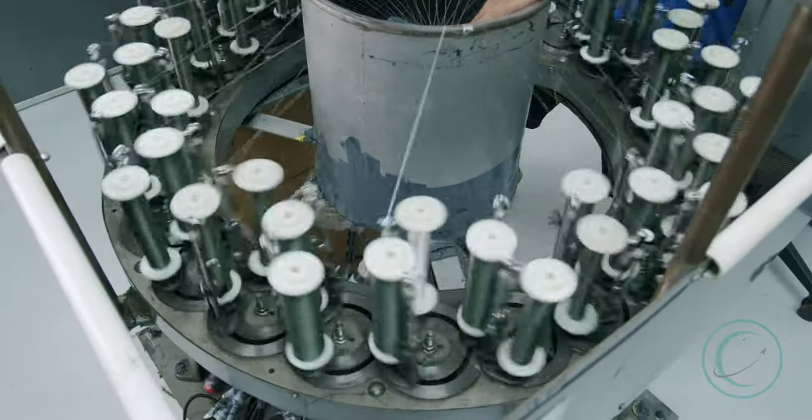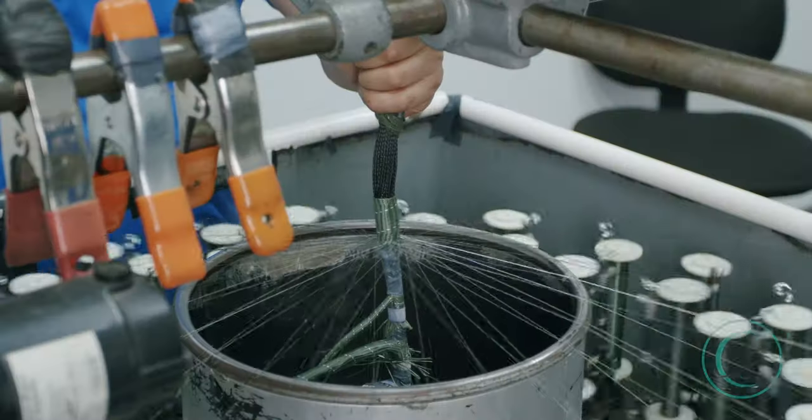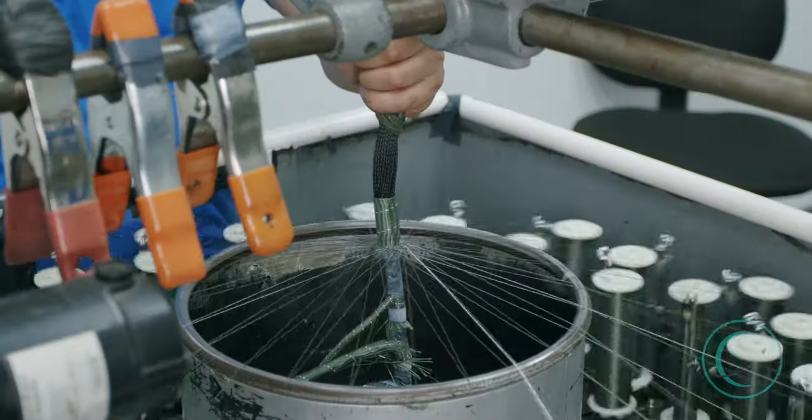For a non-flight control harness, only a single white tracer thread will be used to braid the harness. A double white tracer thread is used for flight control harnesses.